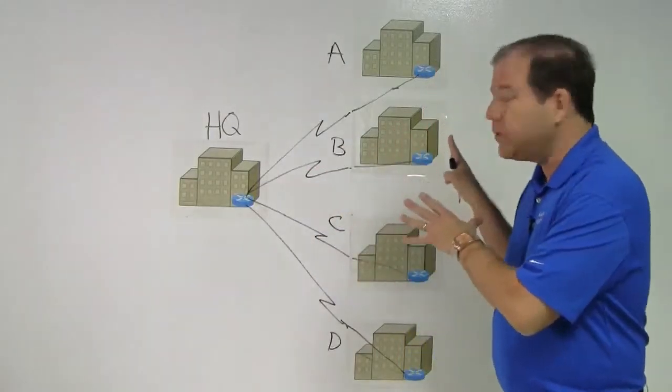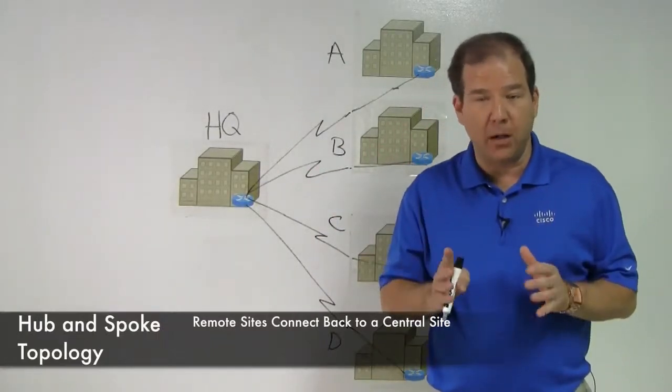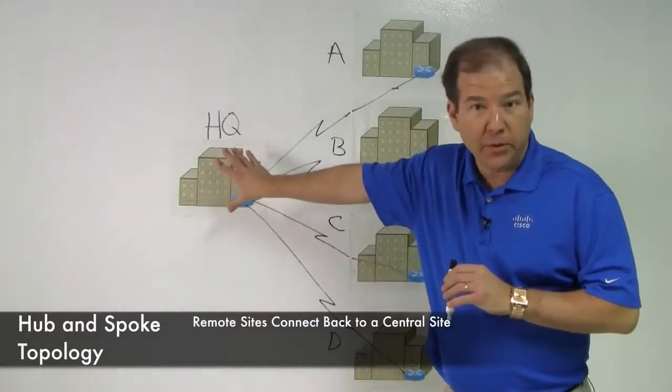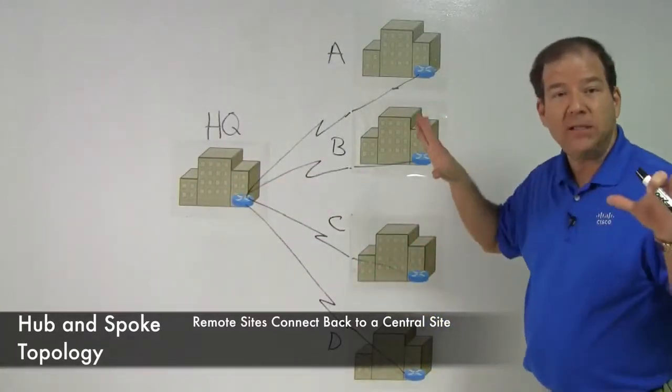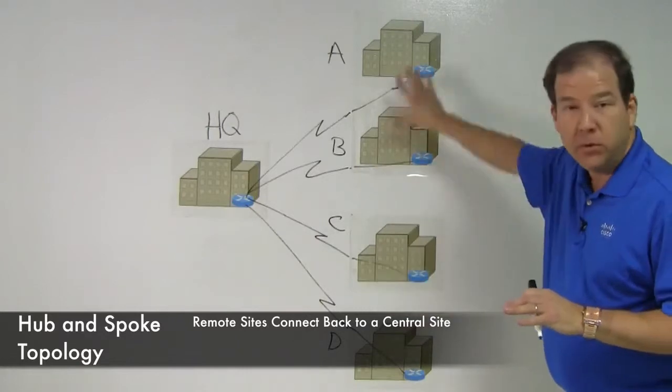What we've described here is a hub and spoke topology. We've got the hub, HQ in this case, that radiates out to all of these remote sites, the spokes.